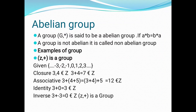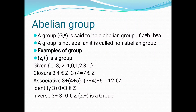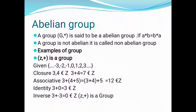The next property is identity. A + e = A. With a = 3, the identity value is zero. Three plus zero equals three, and three is contained in the same set. This property is also satisfied. The last property is inverse: A star A-inverse equals the identity (zero). A is contained in the set, A-inverse is also contained in the set, and the identity is also contained in the set. So (Z, +) is a group.